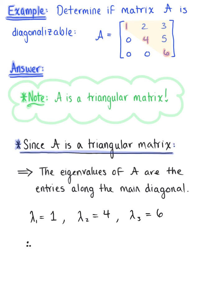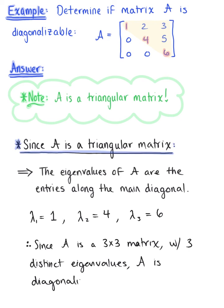We can further conclude that since matrix A is a 3 by 3 matrix with three distinct eigenvalues, as demonstrated above, matrix A is diagonalizable. This is our beautiful final answer.